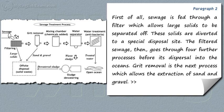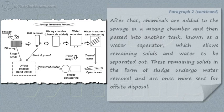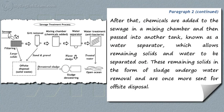Grit removal is the next process which allows the extraction of sand and gravel. After that, chemicals are added to the sewage in a mixing chamber and then passed into another tank, known as a water separator, which allows remaining solids and water to be separated out. These remaining solids in the form of sludge undergo water removal and are once more sent for off-site disposal.